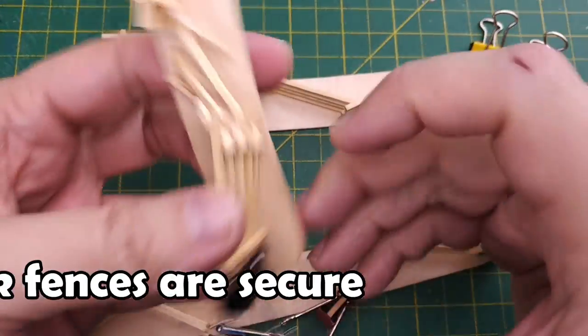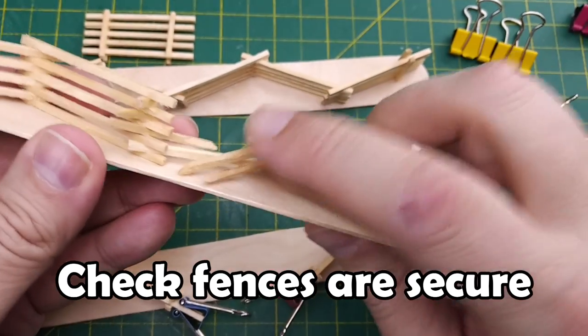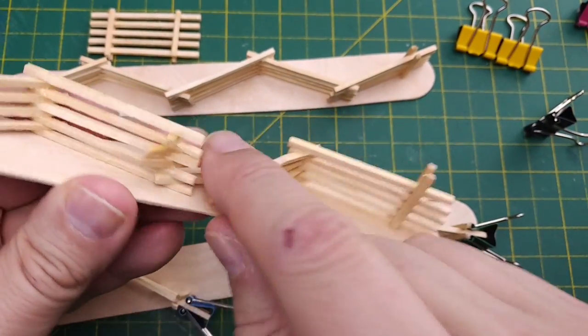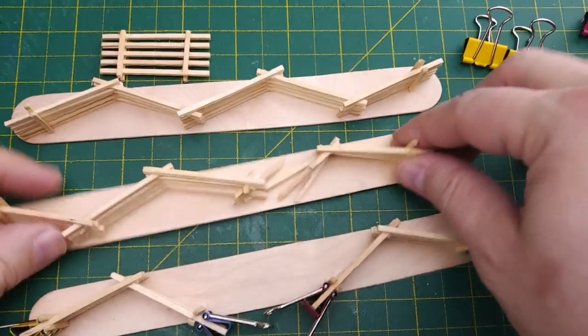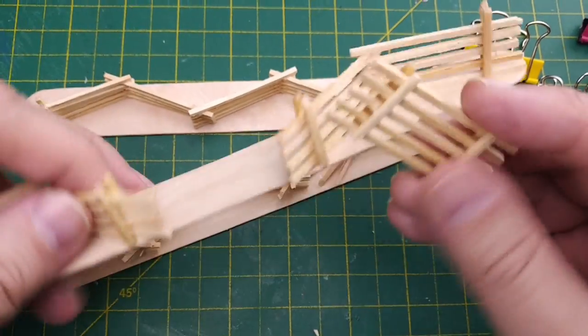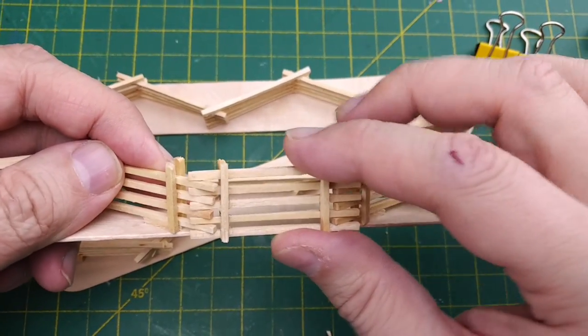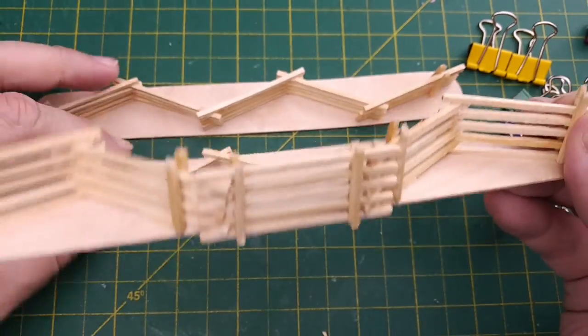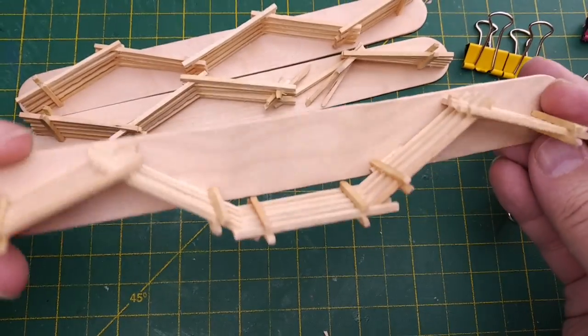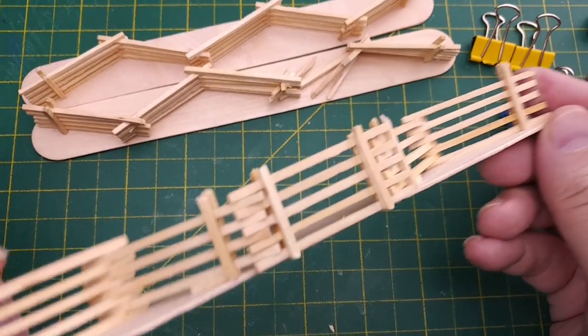Now that the glue on all our fences is dried we can remove the paper clamps and make sure that our fences are securely bonded together. We can also make sure that our gate fits into our open fence section and it fits perfectly. Before we decorate our fence we're going to build our wattle style fence.